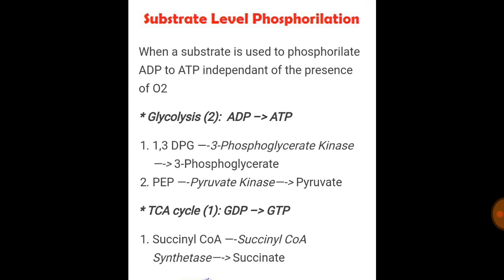They can ask what is the end product of substrate level phosphorylation in glycolysis, giving options like 3-phosphoglycerate and pyruvate. The two steps are: first, 1,3-DPG to 3-phosphoglycerate by 3-phosphoglycerate kinase; second, PEP (phosphoenolpyruvate) to pyruvate by pyruvate kinase. The two enzymes are 3-phosphoglycerate kinase and pyruvate kinase.